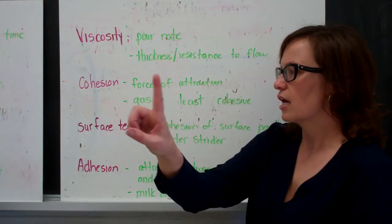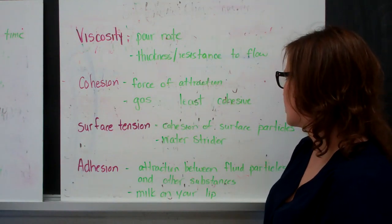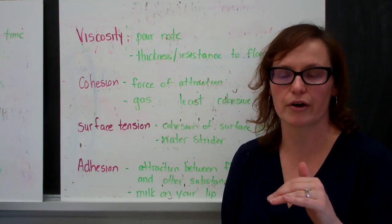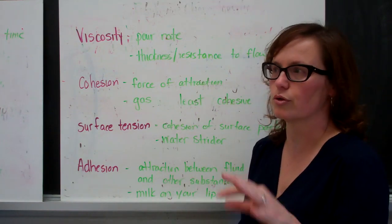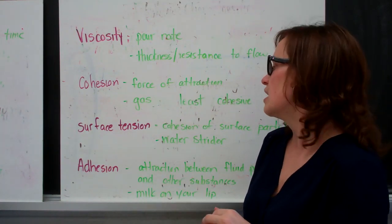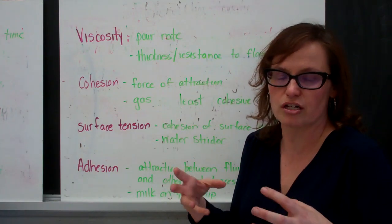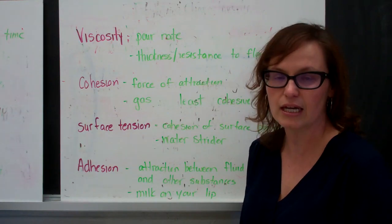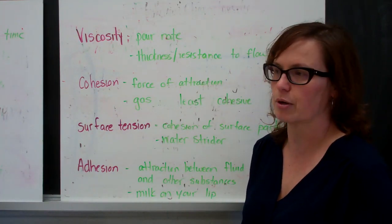Surface tension is the cohesion of a surface particle. So if you think about the surface of the water, and you think about water striders, those bugs that can walk on water, the cohesion or the attraction of the particles on the surface of the water is greater than the force of gravity that would be pulling on the insect to pull it through the water.